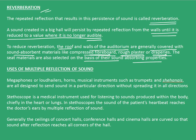We can also have many uses of multiple reflection of sound. Megaphones, loud hailers, horns, and musical instruments such as trumpets and shahnais are all designed to send sound in a particular direction without spreading it in all directions. Similarly, the stethoscope is a medical instrument used for listening to sounds produced within the body, chiefly in the heart or lungs. In stethoscopes, the sound of the patient's heartbeat reaches the doctor's ears by multiple reflection of sound. Generally, the ceilings of concert halls, conference halls, and cinema halls are curved so that the sound after reflection reaches all corners of the hall.